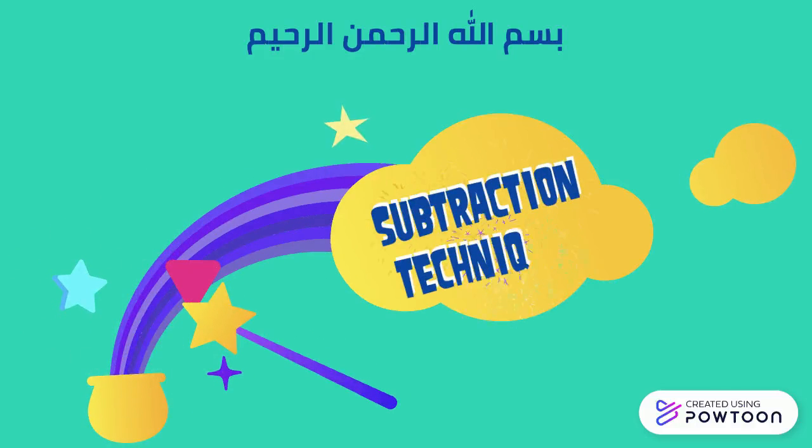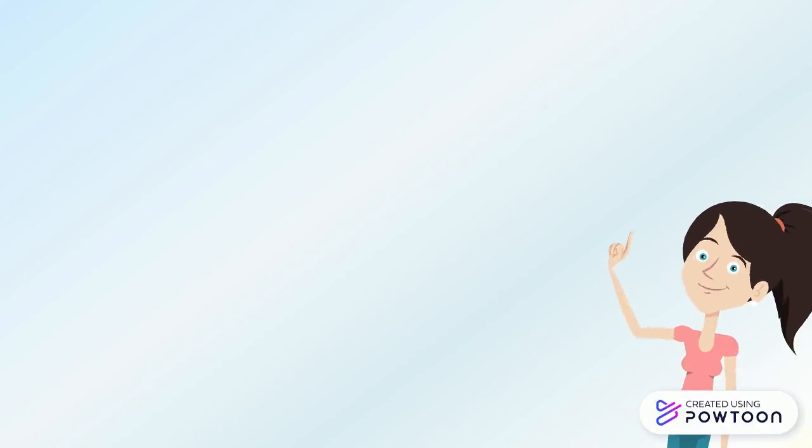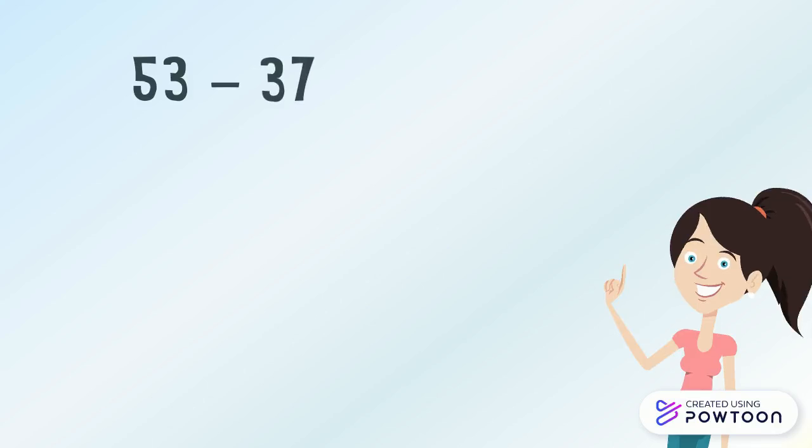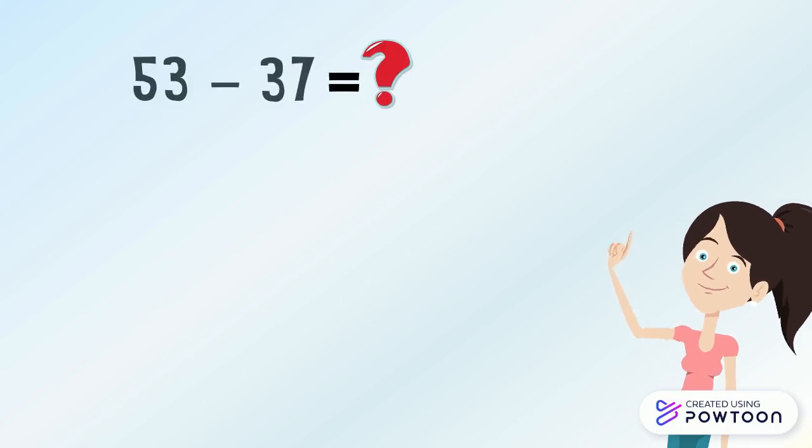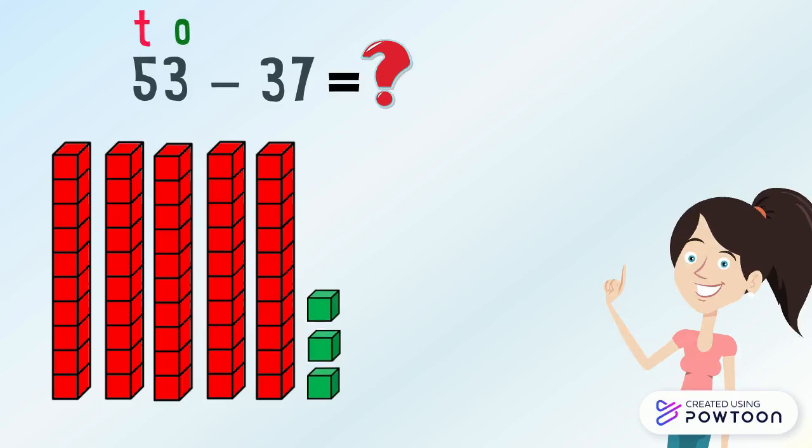Today we are going to learn the subtraction technique. What is 53 minus 37 equal to? It is as if we are finding the difference between 53 and 37. In the number 53 there are five tens and three ones.